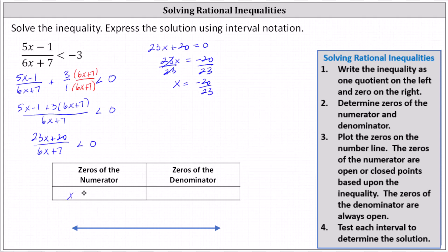Let's record this below. To find the zero of the denominator, we solve the equation six x plus seven equals zero. Subtracting seven on both sides and then dividing by six, we have x equals negative seven sixths as the zero of the denominator.